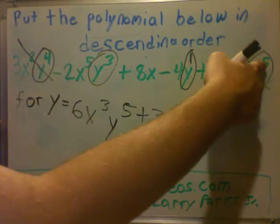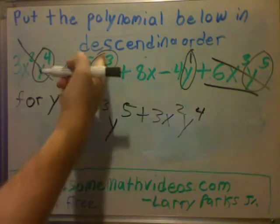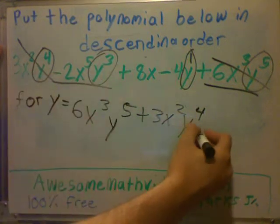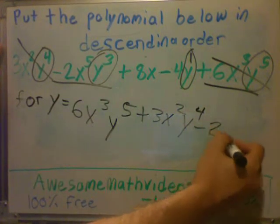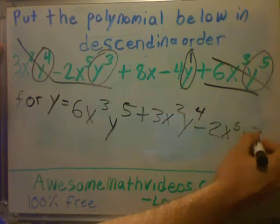Okay, so I want five y's, four y's. And what's the next smallest number of y's? It would be three. Make sure you carry over the minus in front. So it would be minus two x to the fifth, y to the third.